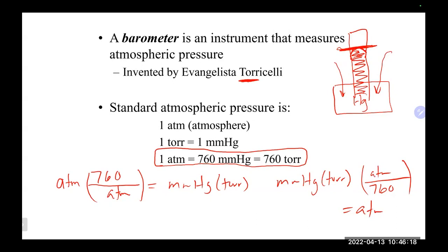There are other units of pressure as well: PSI — pounds per square inch — is one. A Pascal or kilopascal is another unit of pressure. A bar is also common and is almost equal to one atmosphere — about 1.01 bar equals one atmosphere. In most chemistry classes, ATM, torr, and millimeters of mercury are the big three you encounter.